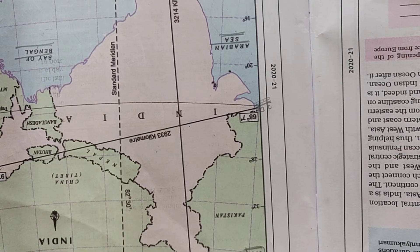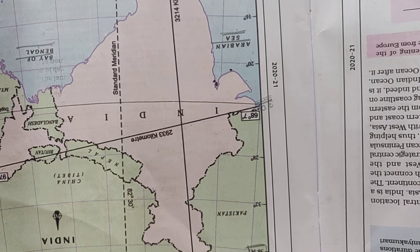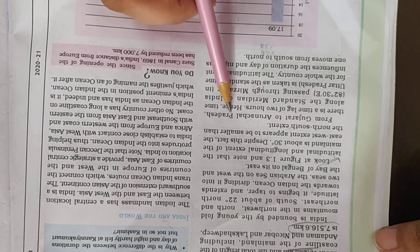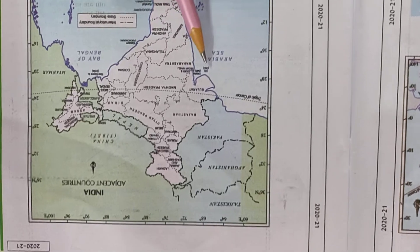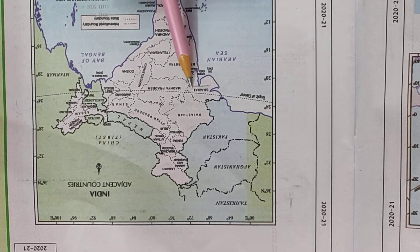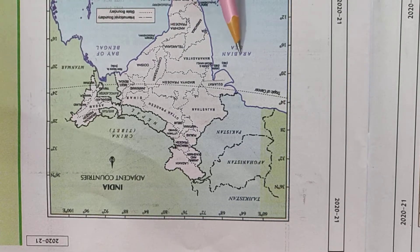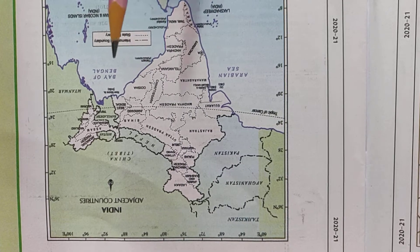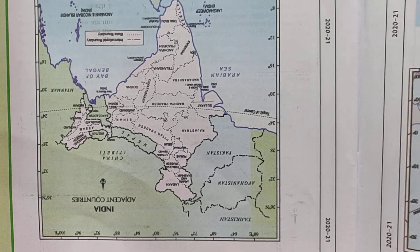From Gujarat to Arunachal Pradesh there is a time lag of 2 hours. Here you can see Gujarat and Arunachal Pradesh on page number 5. So our Gujarat and Arunachal Pradesh — the time lag, meaning the time gap between them, is 2 hours.